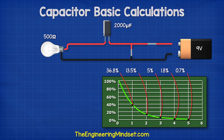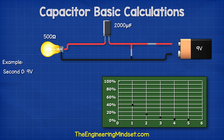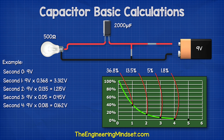For example, if we had a 9 volt battery, a lamp with a resistance of 500 ohms, and a 2,000 microfarad capacitor, our time constant would be 500 ohms multiplied by 0.002 farads, which is one second. So at the very moment the battery is disconnected, the capacitor will be at nine volts and the lamp will also experience nine volts. After one second, the voltage will be 36.8%, which is 3.312 volts. At two seconds it's 1.215 volts, at three seconds 0.45 volts, at four seconds 0.162 volts, and at five seconds 0.063 volts. So the lamp will be illuminated for just under three seconds, though it will become dimmer towards the end.